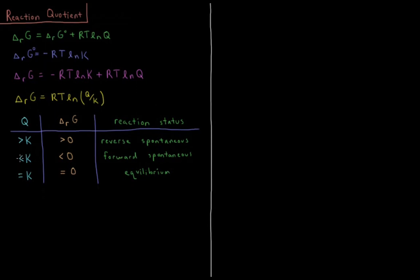Similarly, if we have a reaction quotient which is less than the equilibrium constant — if Q is less than K — then we have a number less than one inside the logarithm. The natural log of a number less than one is negative. A negative times a positive times a positive gives a negative delta G of reaction, so the reaction is spontaneous in the forward direction.